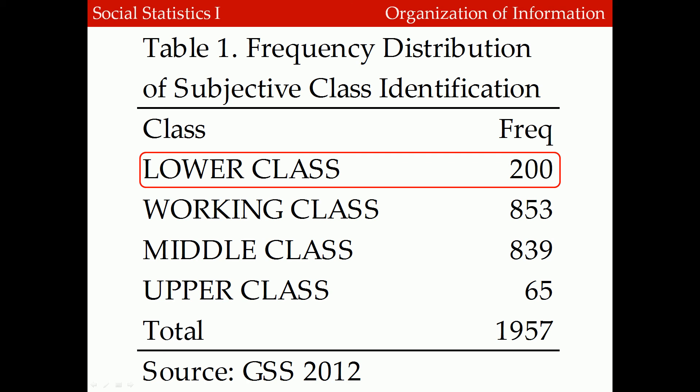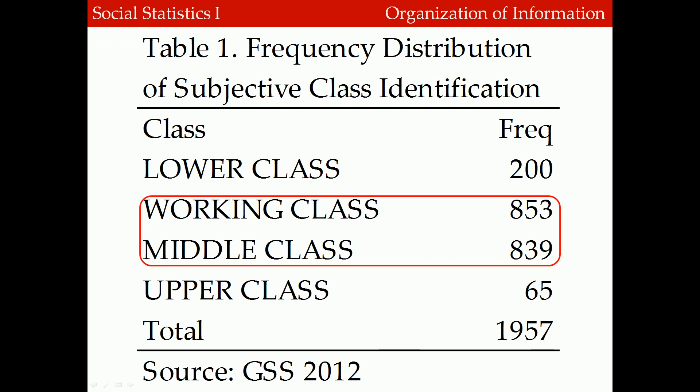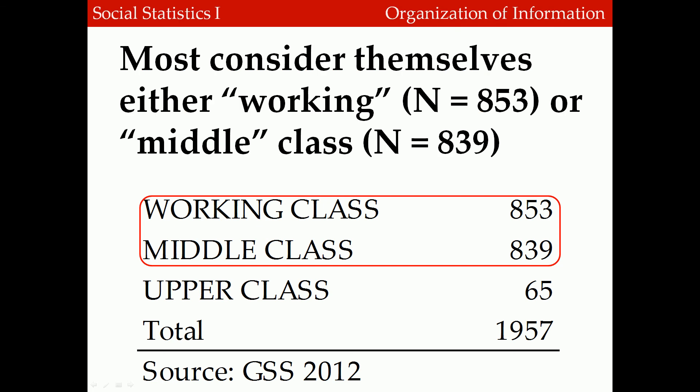Now let's look at the different frequencies for each of the categories. Starting with the lowest category, lower class — we see that the frequency for this category is 200, which indicates that 200 respondents identify as being lower class. We can also look at tables and identify larger patterns. Most people consider themselves to be in the middle: 853 people consider themselves working class, while 839 people consider themselves to be in the middle class.